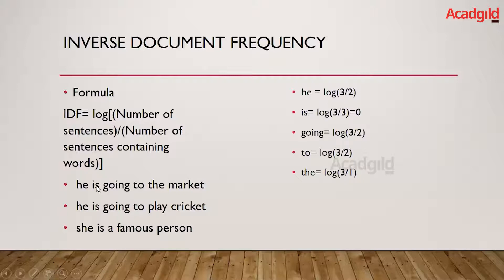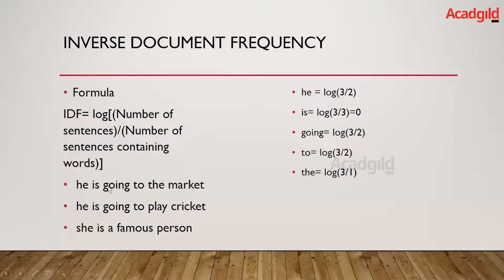For the second word 'is', we have log(3/3), which is nothing but zero. We have three by three because the number of sentences is three and 'is' is present in sentence one, sentence two, and sentence three — forming the denominator, which is the number of sentences containing the word.